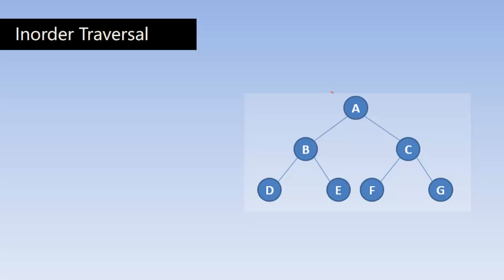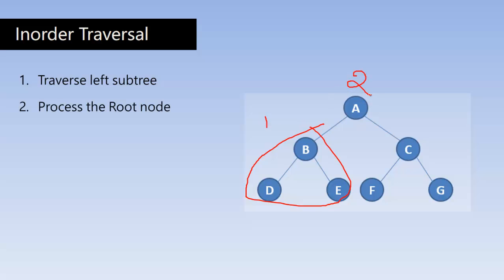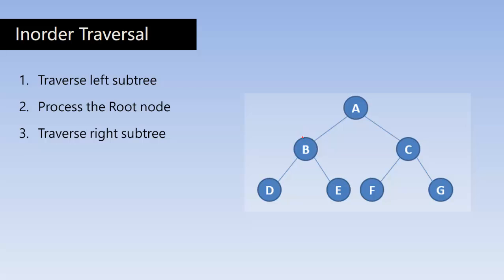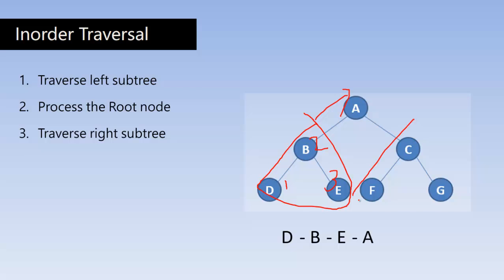Now let us study the in-order traversal. In in-order traversal, we first traverse the left subtree, then process the root node, and then traverse the right subtree. While traversing through the left subtree, first we traverse the left subtree, then the root, then the right subtree. So first traverse left subtree — come to node B, which is again a binary tree. Traverse left subtree: that is D. So first D comes, then since there is no subtree associated with D, traverse the root B, then right subtree E. Then process A, then come to the right subtree and process F, then C, then G. So this is the output of in-order traversal.